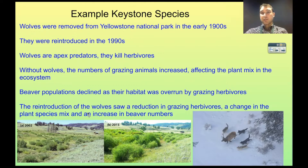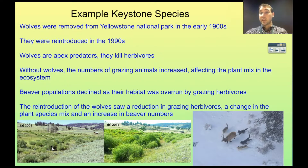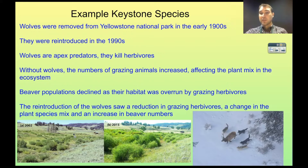The reintroduction of the wolves has been studied very heavily, and it's been found that the number of grazing herbivores has decreased. Because they have decreased, the plant mix has changed completely — we're getting regrowth of plants that used to be eaten by the large herbivores. We've also seen an increase in beaver numbers because of the reduction in the herbivore population. The numbers of bears have also increased, which is interesting because there are more berries available, one of the big food sources for bears at particular times of year.